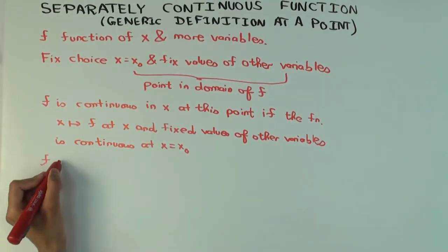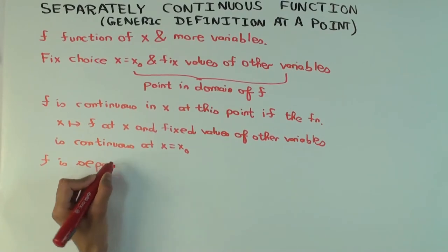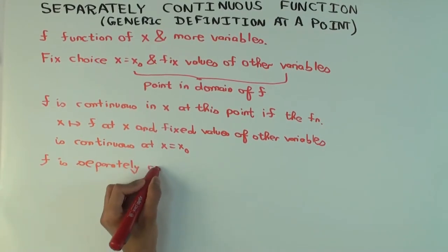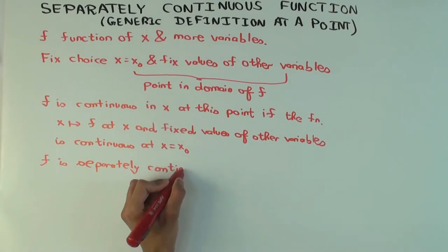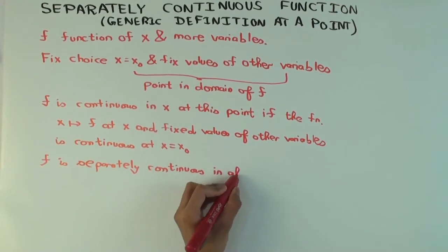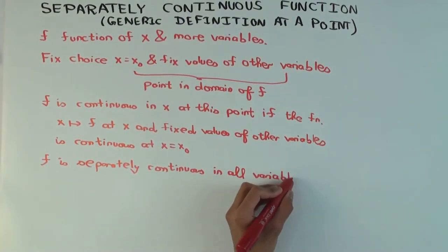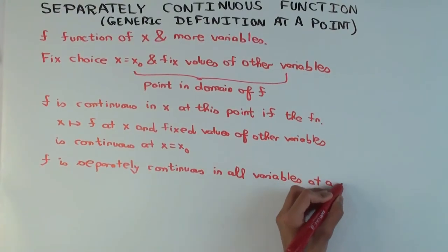Now, you say that f is separately continuous in all the variables. Continuous at a point in all variables. What do you think that would be?